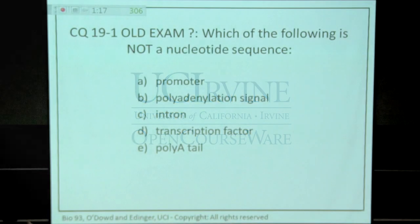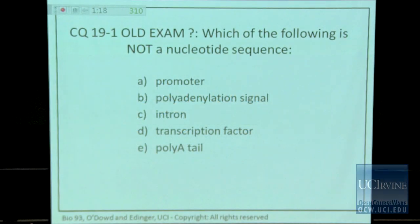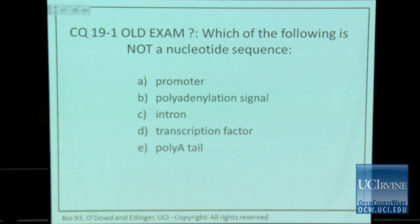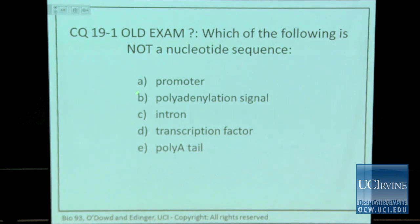Let's go ahead and start and see how you guys did with this one. This is similar to how section A felt about things. We had three answers in the middle that were popular. The two that you guys knew were nucleotide sequences were the promoter and the poly-A tail. Both of those are nucleotide sequences, but we weren't so sure about the other three.